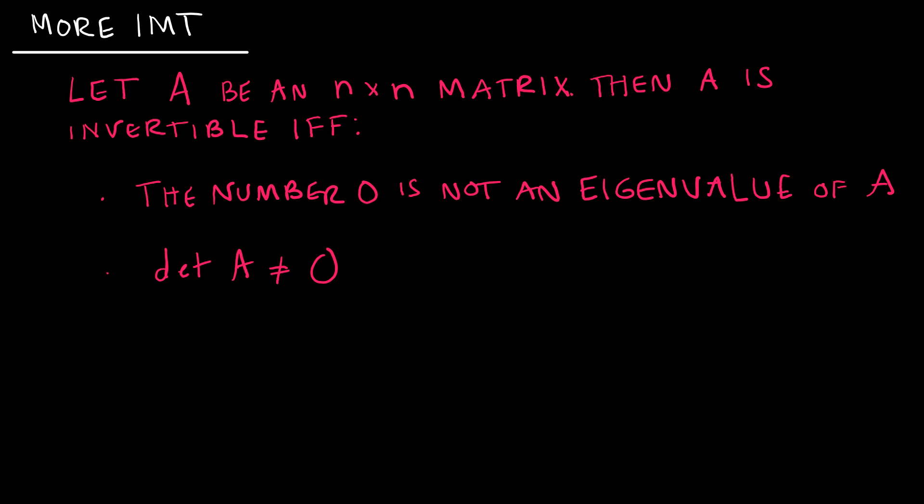We'll finish this video by adding two more items to our invertible matrix theorem. And again, just things that we've already talked about. So we can also say that if A is an n by n matrix, then A is invertible if and only if the number 0 is not an eigenvalue of A, and if the determinant of A is not equal to 0. So those can now be added to our invertible matrix theorem. Stay tuned. Our next lesson is going to talk about the characteristic equation.